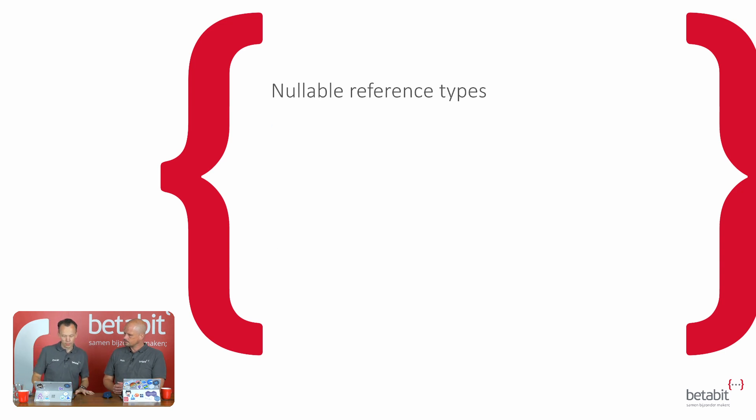Big one: nullable reference types. Starting from C# 8, you can use the nullable reference type. Null is a problem — we always check for null everywhere, or we do not and we run into problems. It would be really nice, while you're typing your code, to be aware of possible problems. The powerful IDE can help you find out what could be a problem.